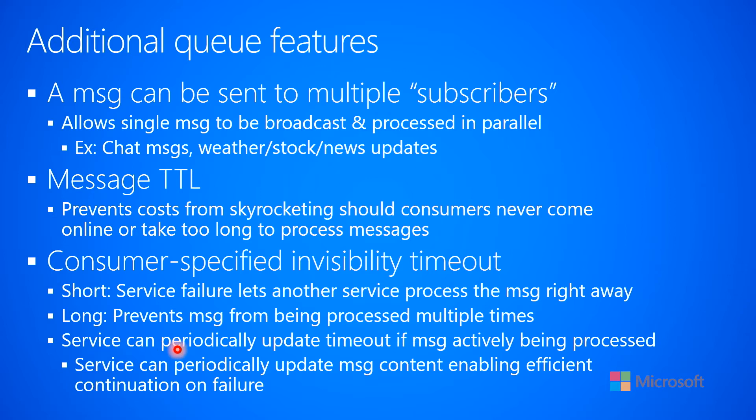Some queues allow the service that's processing a message to periodically go back to the queue and increase or change the invisibility timeout. The service can pull a message from the queue, look at the contents, and say, 'this is going to take me an hour, so let me tell the queue to keep this invisible for an hour.' Or it could look at the message and say, 'I only need five seconds to process this,' and set the invisibility to five seconds. So you're looking at the content of the message and changing the invisibility based on an expectation of how long it will take to process.